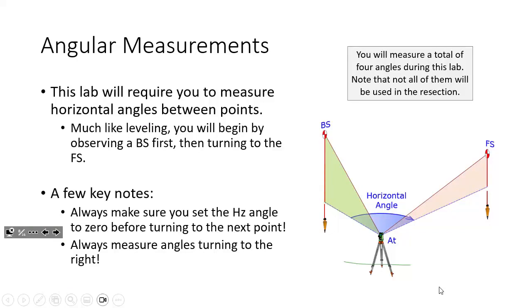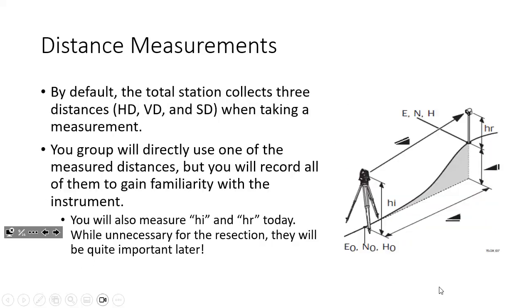Whenever you're taking your angular measurements inside your traverse, make sure that when you do your backsight, you set the angle to zero before you turn. Make sure you're always turning to the right whenever you perform your angular measurements. For distance measurements, when you hit the all button it does all three, but we only need the horizontal distances, so make sure you're only recording the one with the horizontal symbol in your field notes.